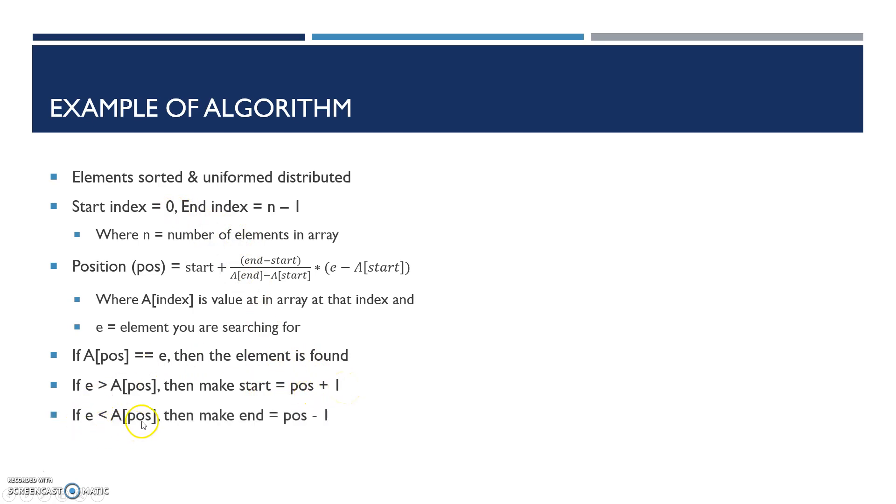The third case: if it's less than the current value you're looking for, then make end change instead of start. It would be the current position's index minus 1. I'll provide an example of how these are used.